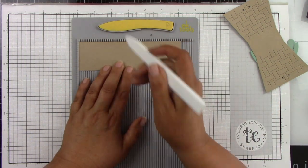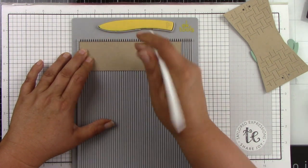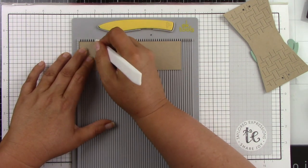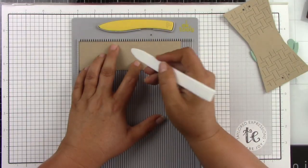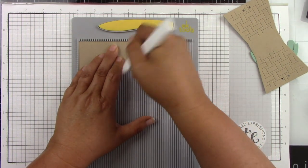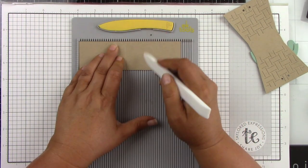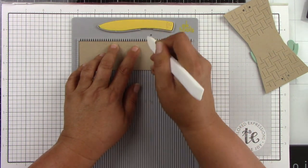So I'm going to score it first at 1 inch, then at 2 and 3 quarters of an inch. I'm making sure I get a really good score line. So 1 inch, 2 and 3 quarters inch, then 3 and 3 quarters of an inch, and then 5 and a half.